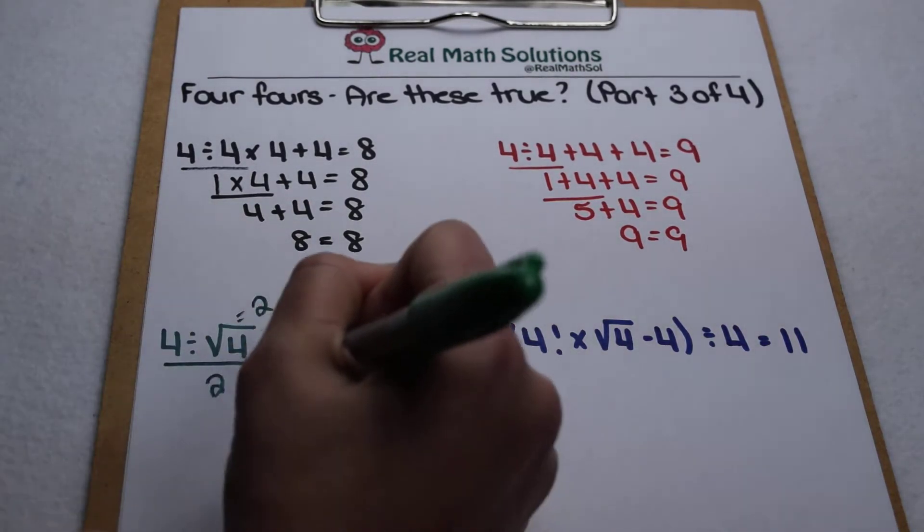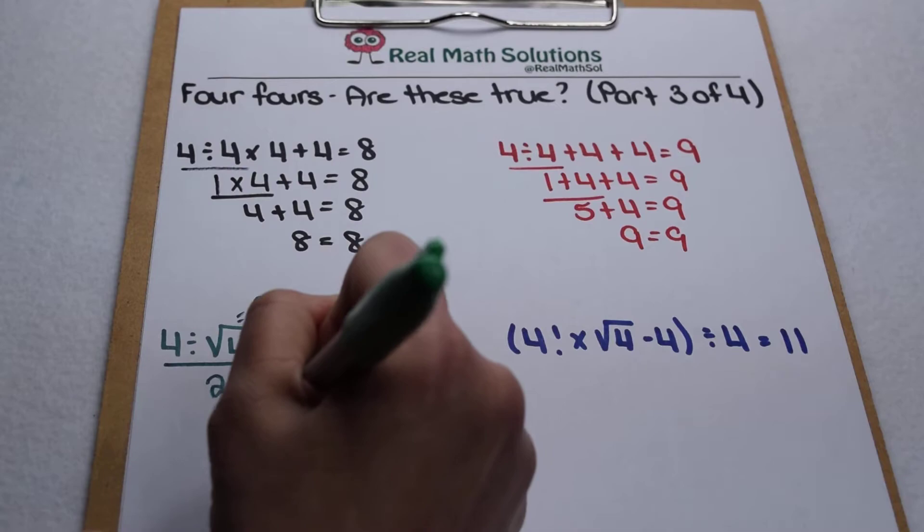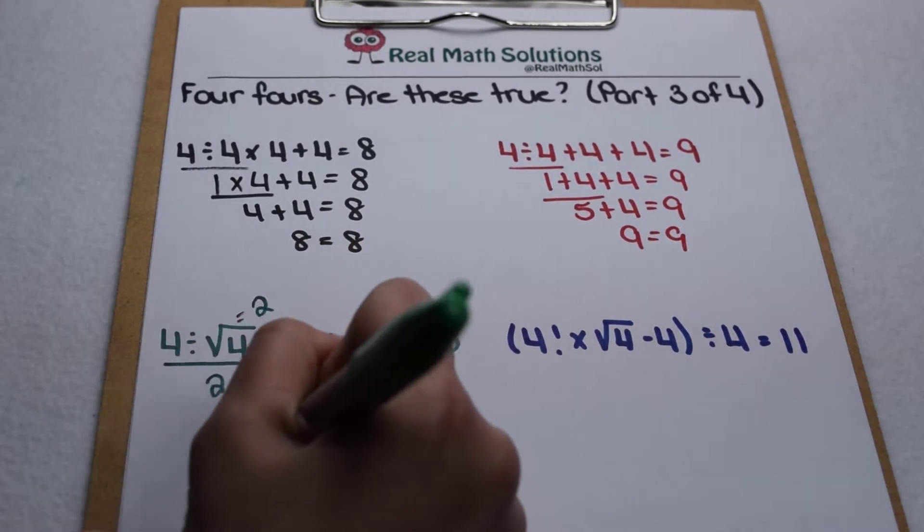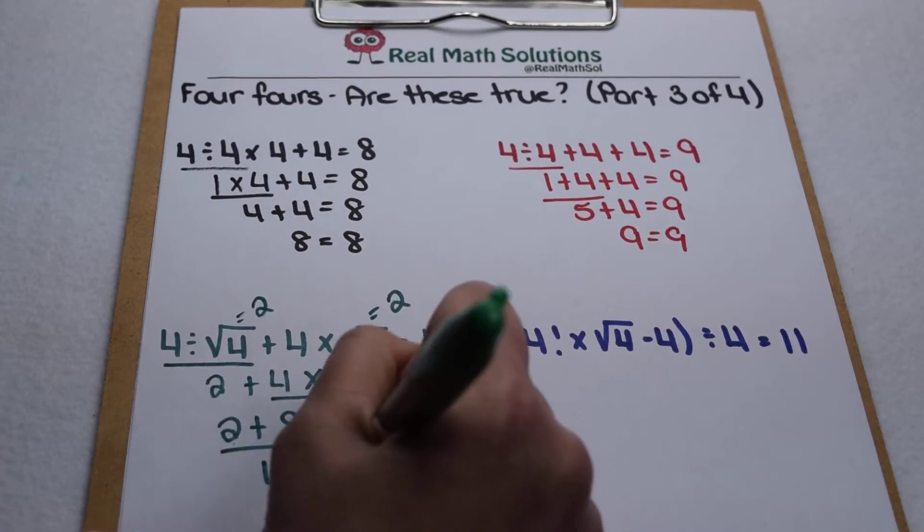Now I can work my multiplication, 4 times 2, so that leaves us with 2 plus 8 to give us 10. 2 plus 8 does equal 10, so that one also checks out.